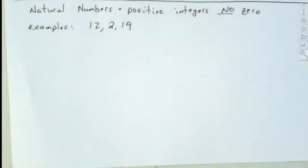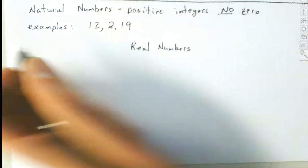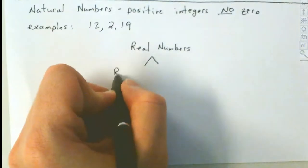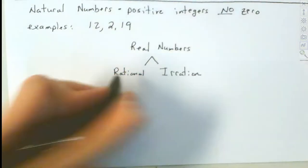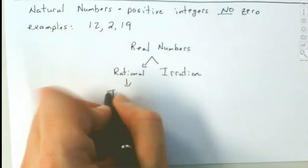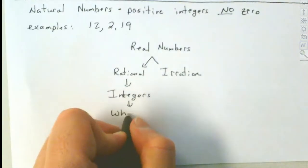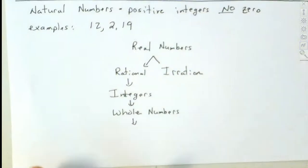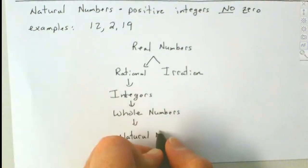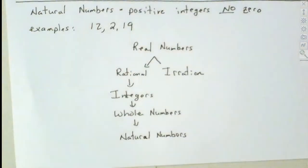In order to classify numbers, we use a tree. We've got real numbers up at the top — all numbers are real numbers. Then they break down into either rational or irrational. The rational numbers break down into integers, then whole numbers, and finally natural numbers. How we classify them was how they were discovered.